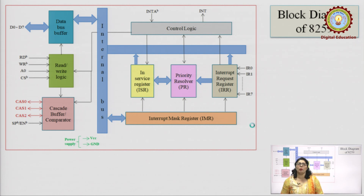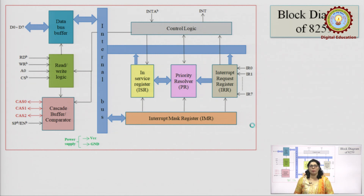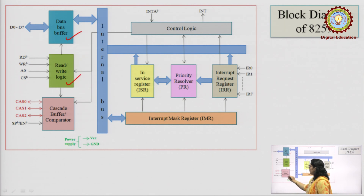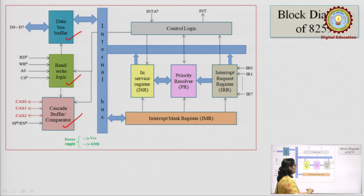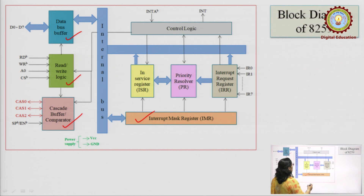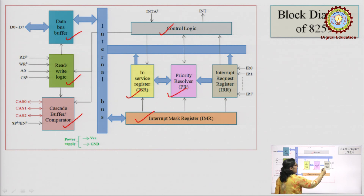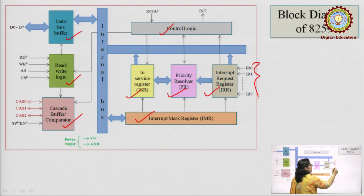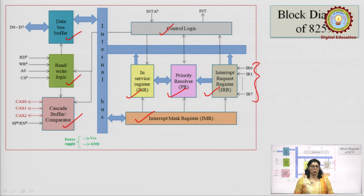Now let's understand the block diagram of 8259. In the block diagram we have: a data bus buffer, read-write logic, cascade buffer and comparator. We also have the interrupt mask register, control logic, in-service register, priority resolver, and the interrupt request register — to which the 8 interrupt pins are connected. Let us understand all these blocks one by one.